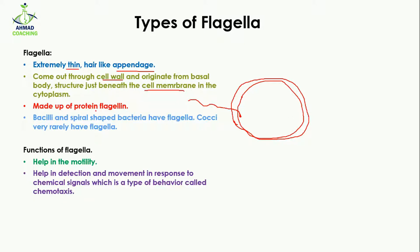Flagella are made up of a protein called flagellin. Bacilli and spiral-shaped bacteria have flagella, while cocci rarely have flagella. So if you want to study the structure of flagella, you should select bacilli or spiral bacteria. The main function of flagella is in the motility or movement of bacteria — if the bacteria wants to move from one place to another, it is helped by the flagella.